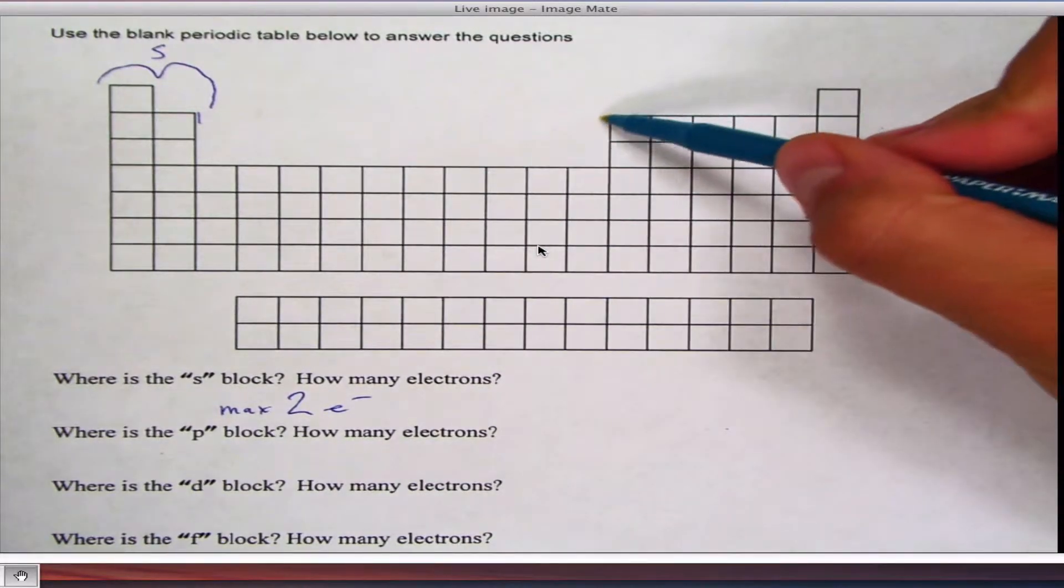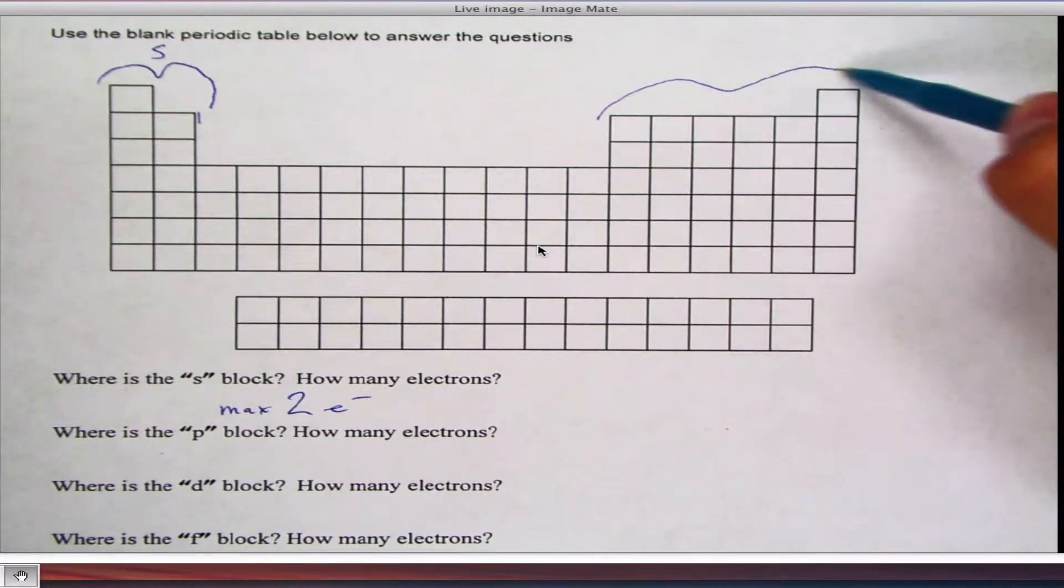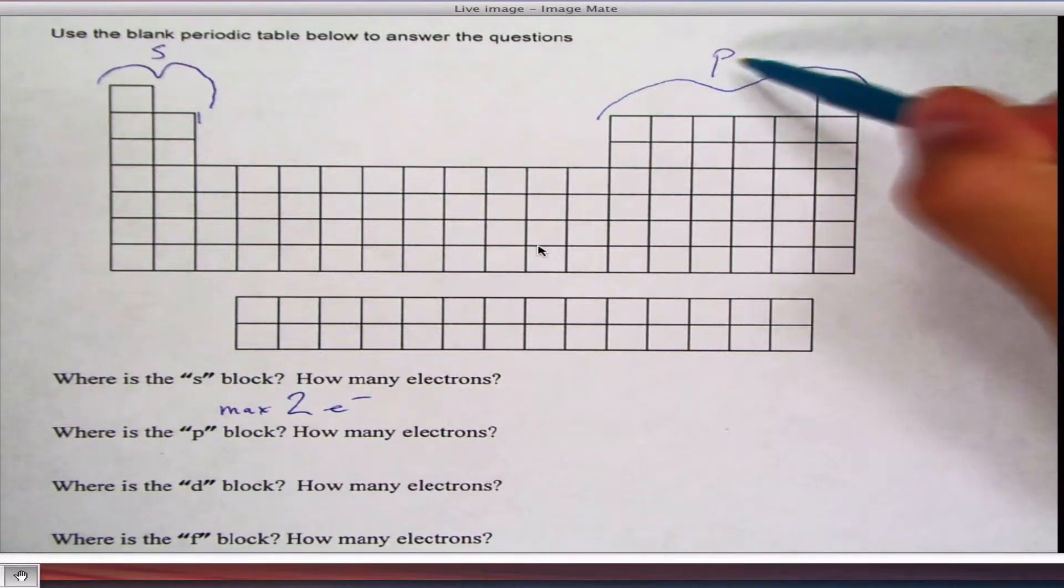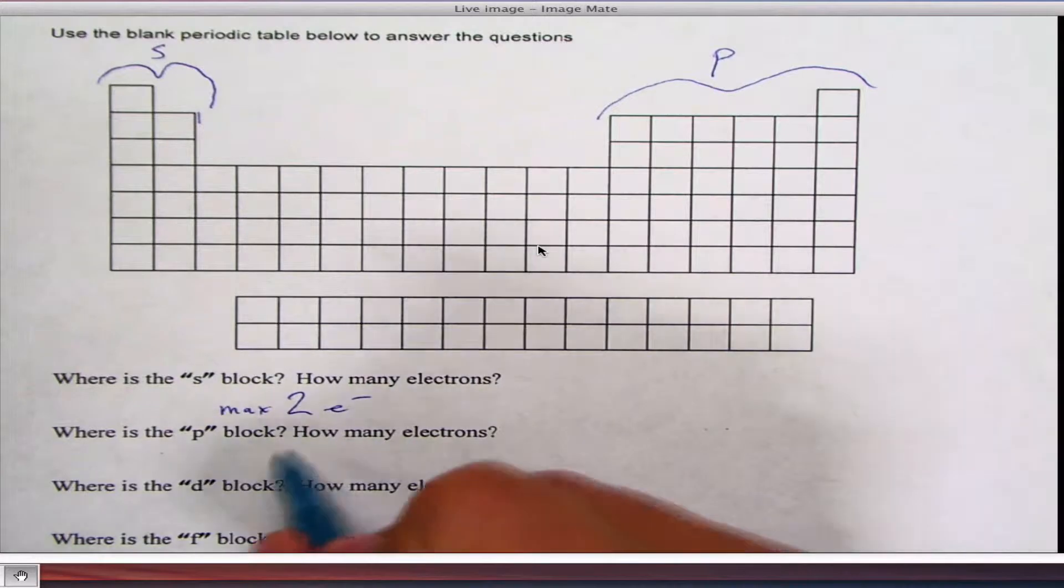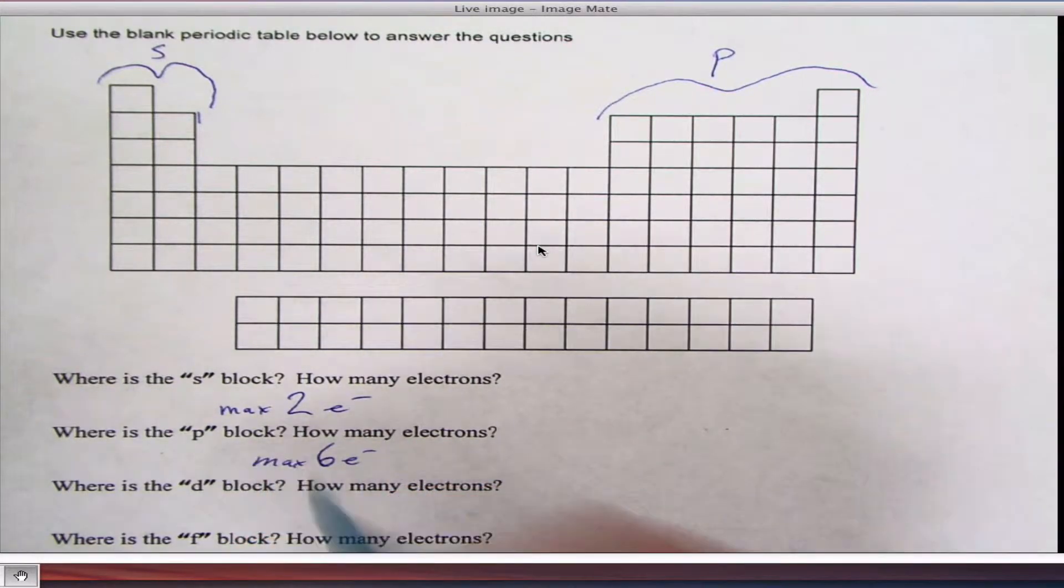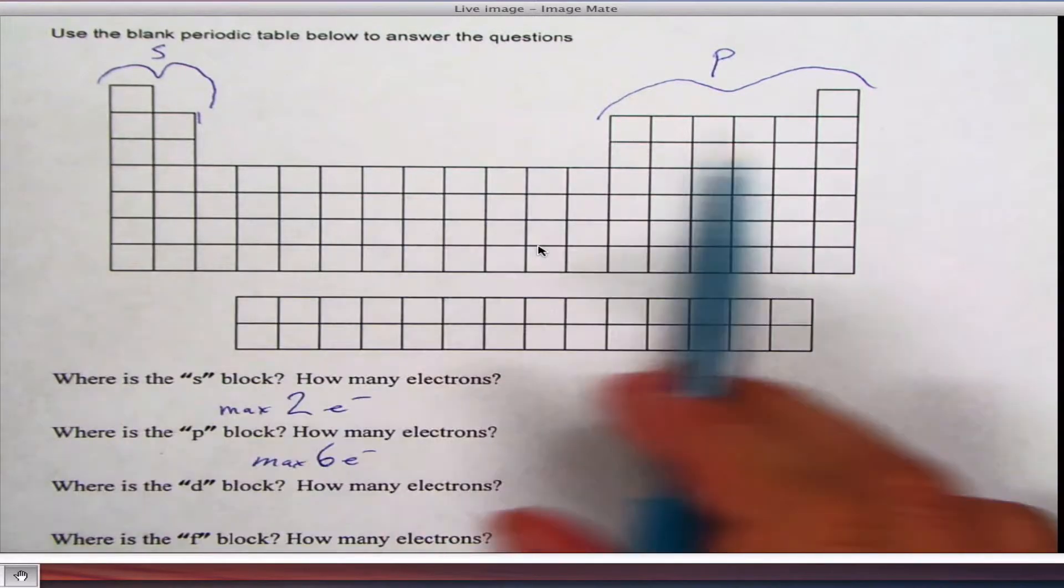Second block is the other tall columns, which would be all of these. This is your P block. The P block can have a maximum of six electrons. So we've got our S, we've got our P block.